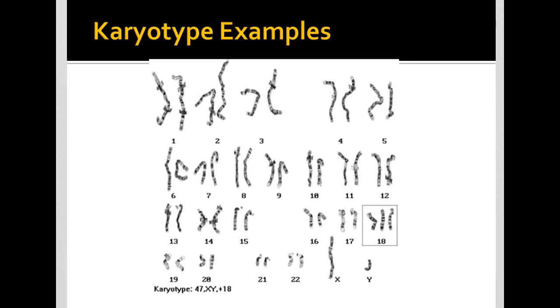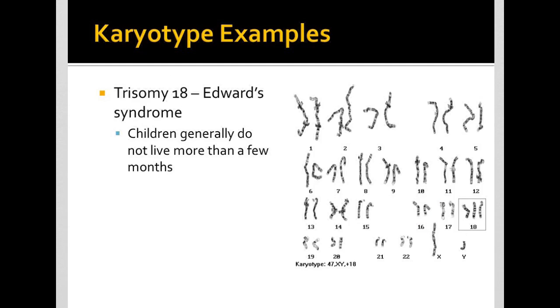This one's different though. Here we have a trisomy at 18, and this is actually going to be Edwards syndrome. At this trisomy, people with Edwards syndrome tend to not live more than a few months. This is an autosomal trisomy that you can be born alive with, but you will not live a long life with Edwards syndrome, unfortunately.